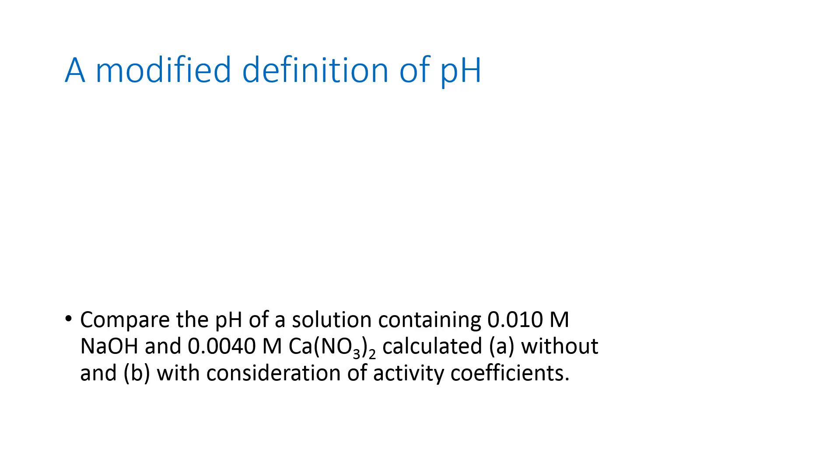So we get a modified definition of pH from this activity coefficient, just like we got a modified definition of the equilibrium constant. So we can have this question, compare the pH of a solution containing 0.01 molar sodium hydroxide and a salt that doesn't give H plus or OH minus ions.